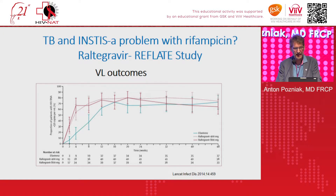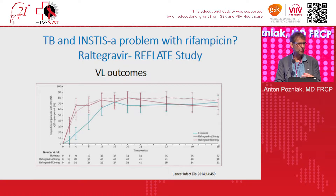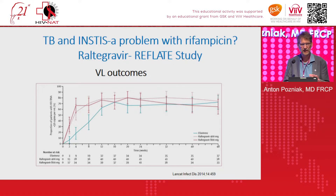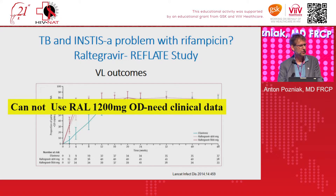What about integrase inhibitors with rifampicin? The Raltegravir study showed that 400mg or 800mg BD twice daily gave the same viral load outcome with and without TB therapy — so you can use Raltegravir. Both doses were effective. Personally we use 800mg BD because I'm concerned about trough levels at 400mg BD if patients miss doses, since Raltegravir is more fragile in terms of developing resistance. There is now a 1200mg once-daily formulation of Raltegravir, but we have no clinical data with TB — do not use this. Stick to 400 or 800mg BD for the duration of TB treatment, then switch back.